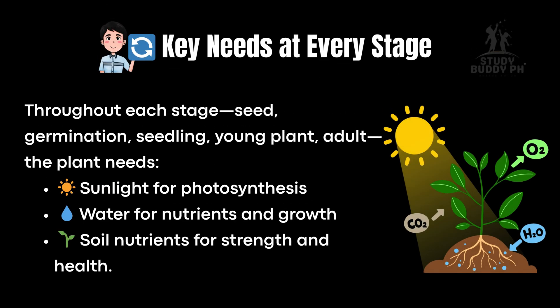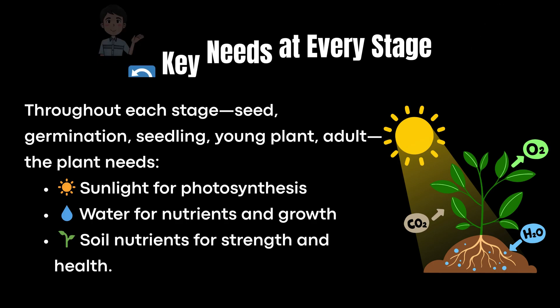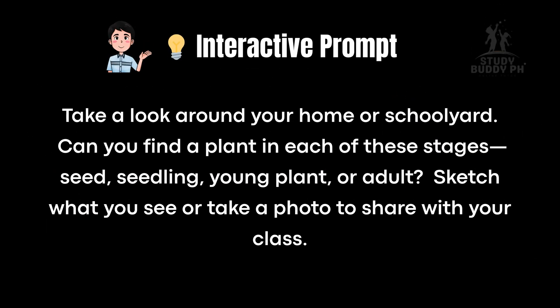Throughout each stage — seed, germination, seedling, young plant, adult — the plant needs sunlight for photosynthesis, water for nutrients and growth, and soil nutrients for strength and health. Take a look around your home or schoolyard. Can you find a plant in each of these stages: seed, seedling, young plant, or adult? Sketch what you see or take a photo to share with your class.